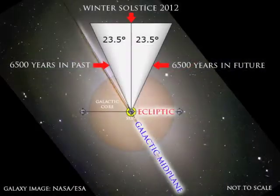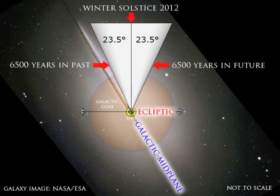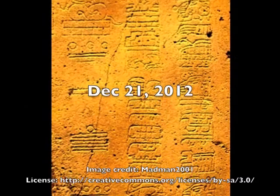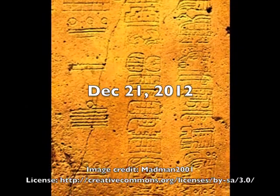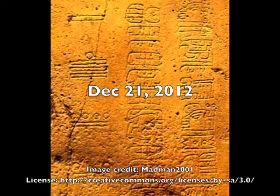The earth's precessional cone, the sun, and the galactic midplane will precisely align on winter solstice 2012. Author John Major Jenkins calls this phenomenon galactic alignment. The Mayan long count calendar was designed to end on winter solstice, December 21, 2012.